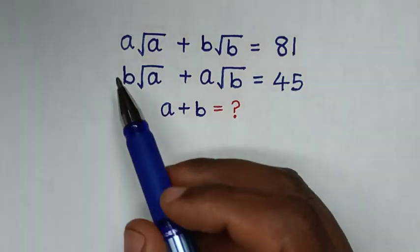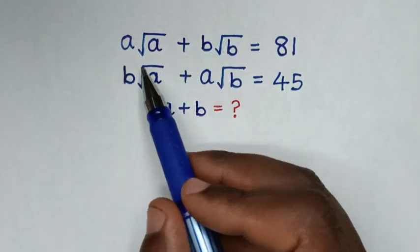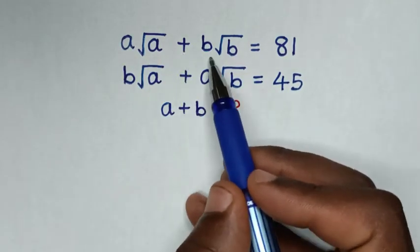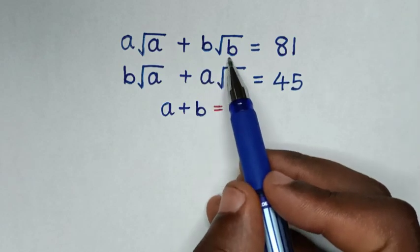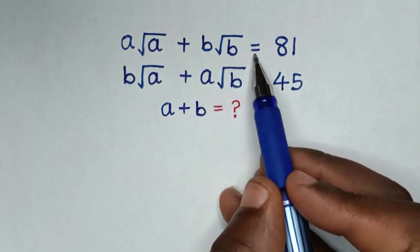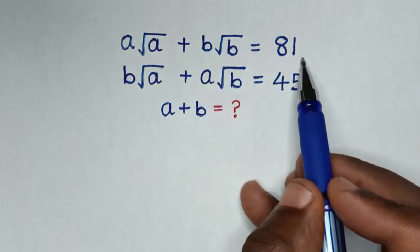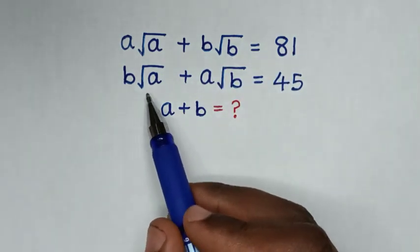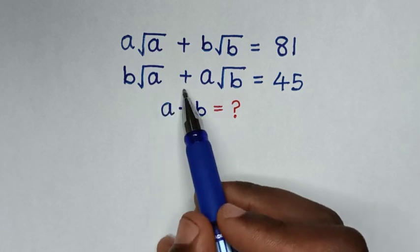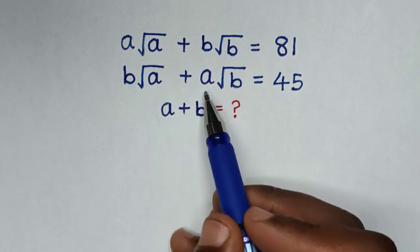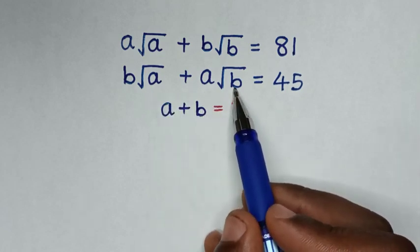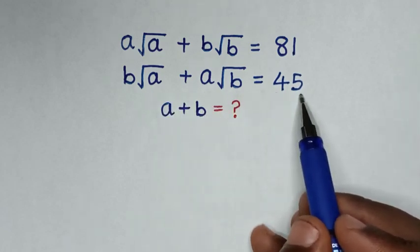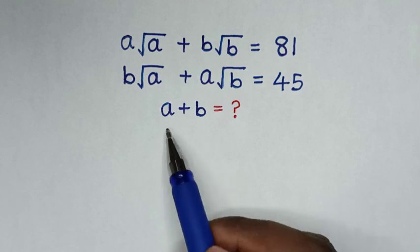Hello. How to solve: square root of a times square root of a plus b times square root of b is equal to 81, and b times square root of a plus a times square root of b is equal to 45, to find the value of a plus b.